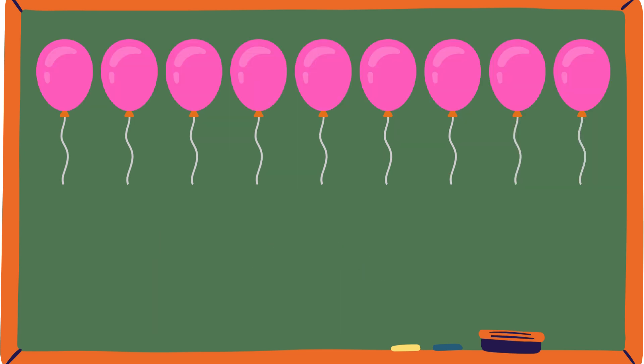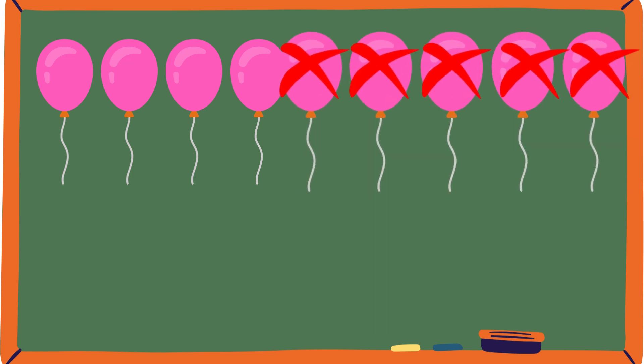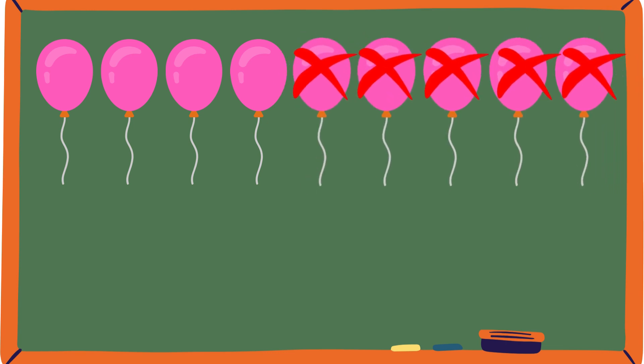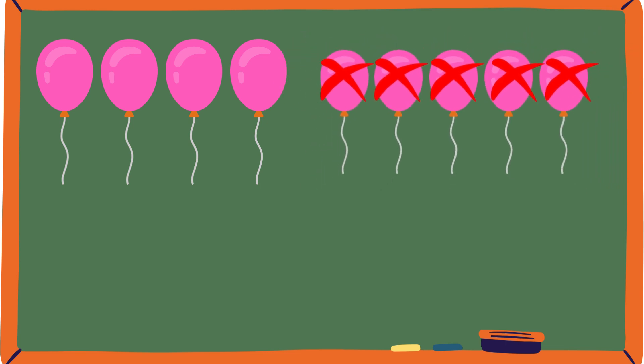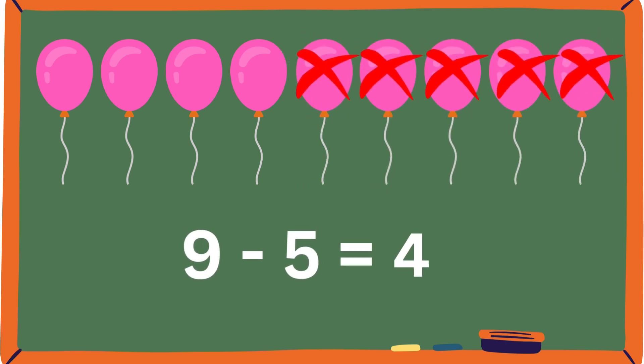Look at that! Some pink balloons. 1, 2, 3, 4, 5, 6, 7, 8, 9 pink balloons. And 5 get popped. How many balloons are left? If you said 4, good job! You're a superstar! This is the equation for that. 9 minus 5 equals 4.